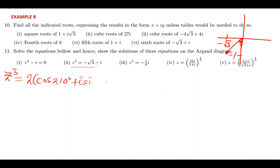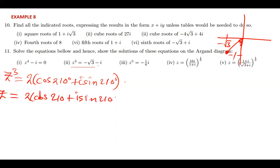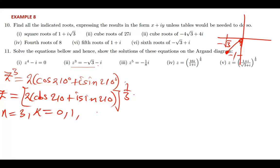When we take the cube root of z on this side and the cube root of the other part, we get z equals 2 times (cos 210° + i sin 210°) all raised to the power 1 over 3. From this we can tell that the value of n is 3, and the k values will simply be 0, 1, and 2.